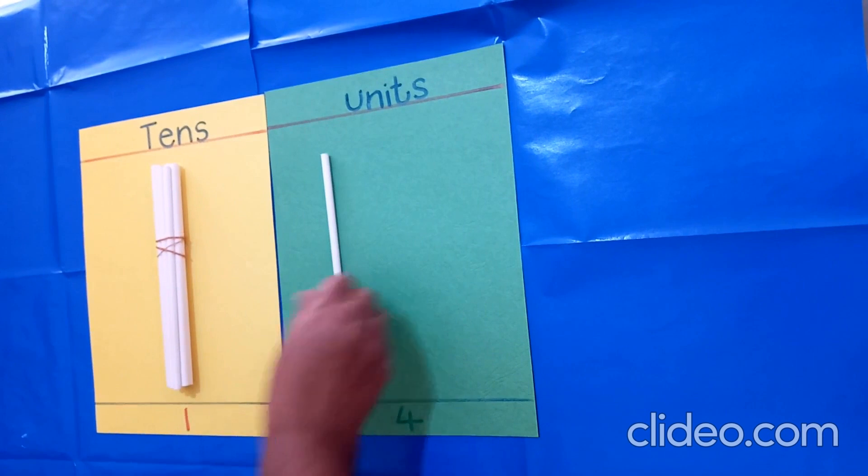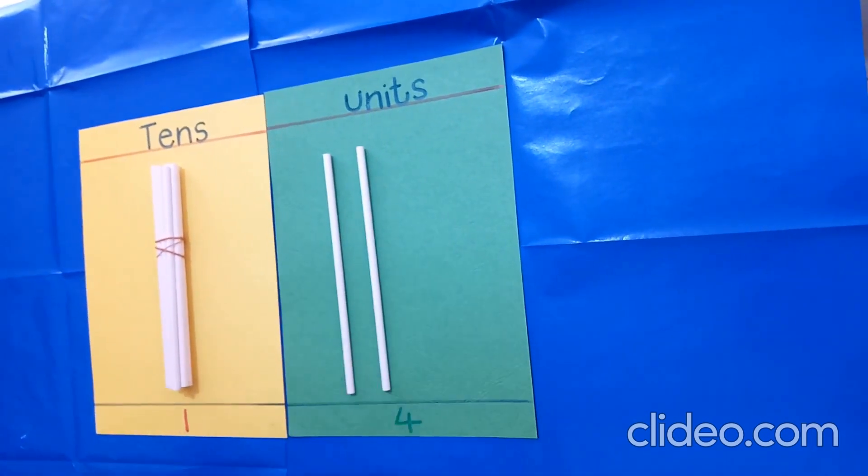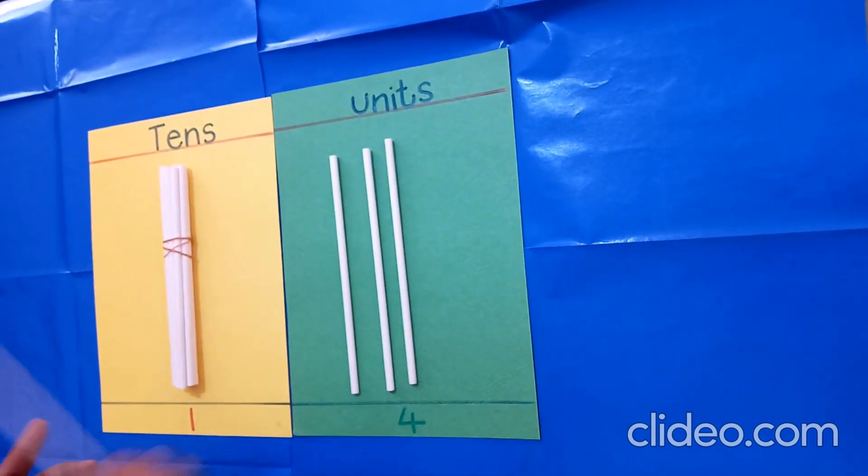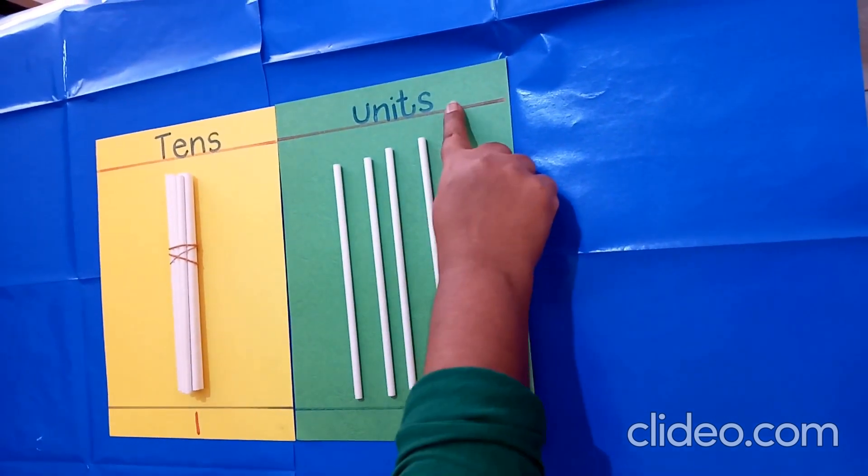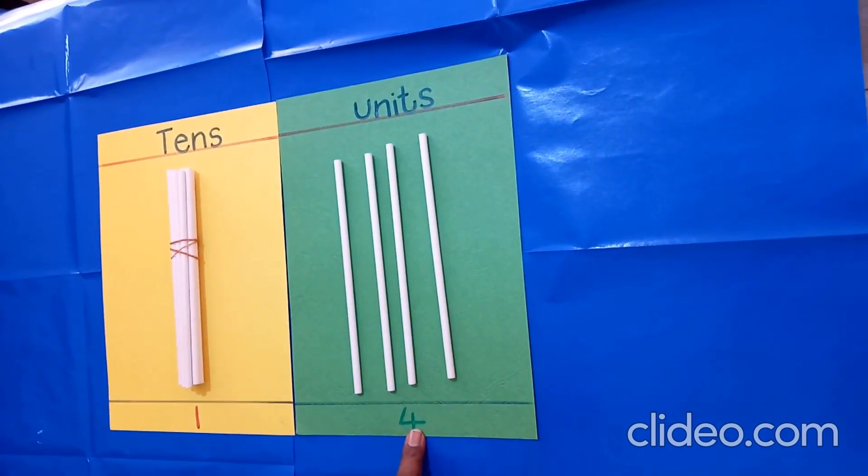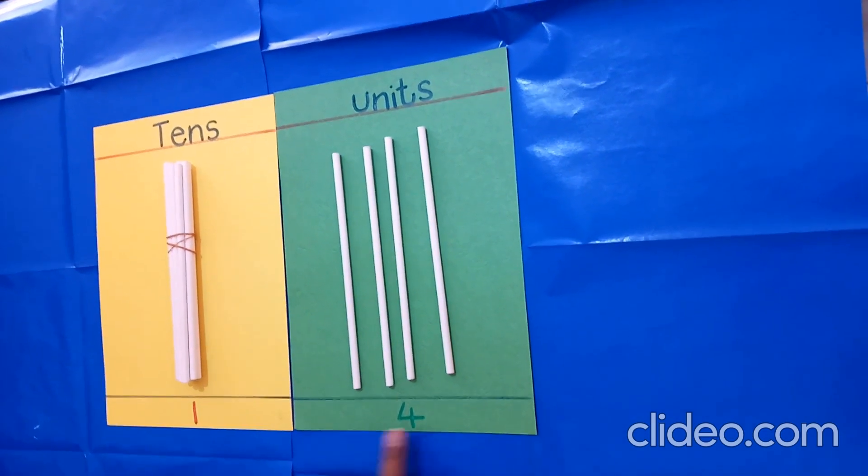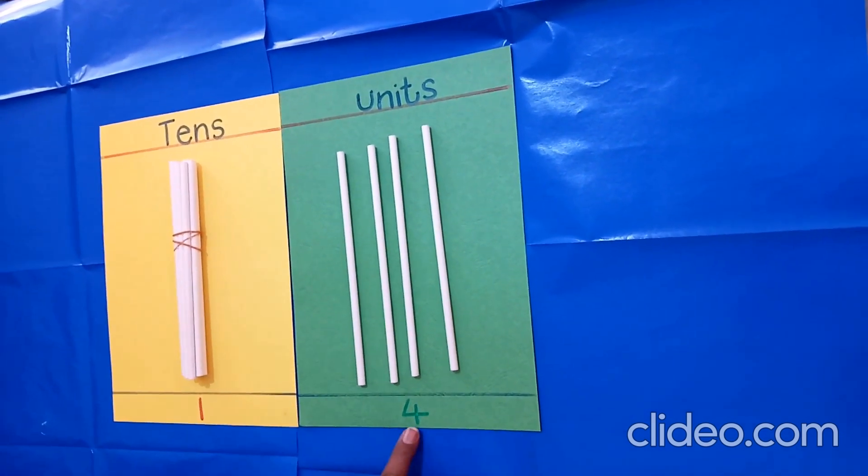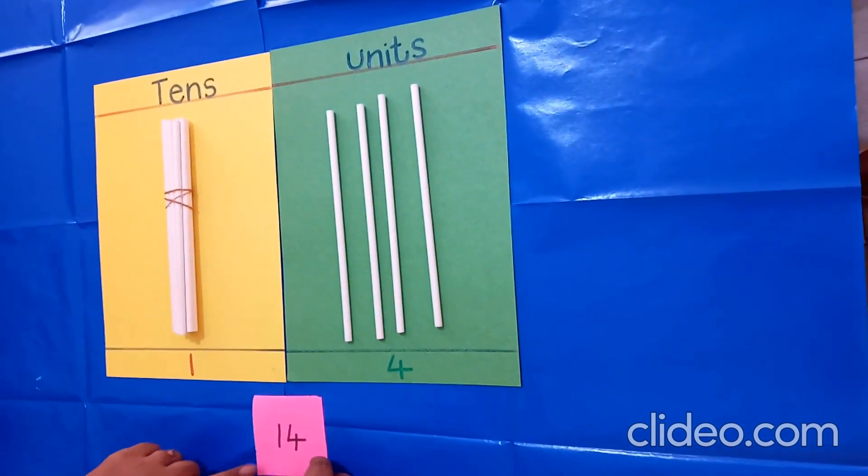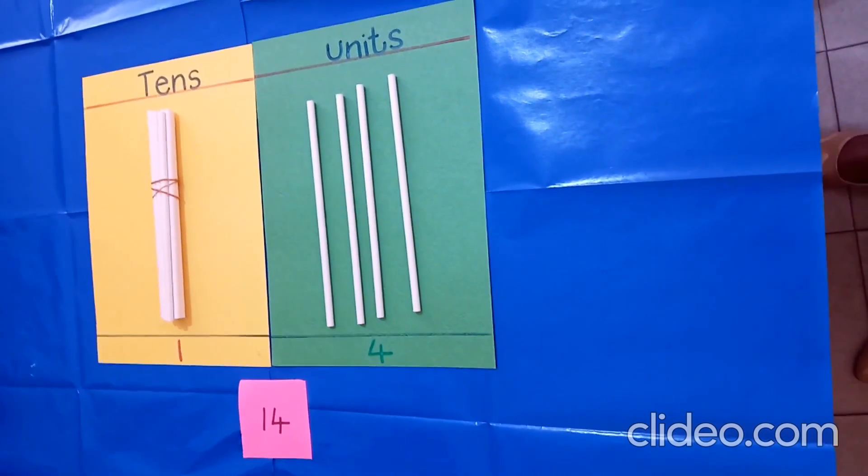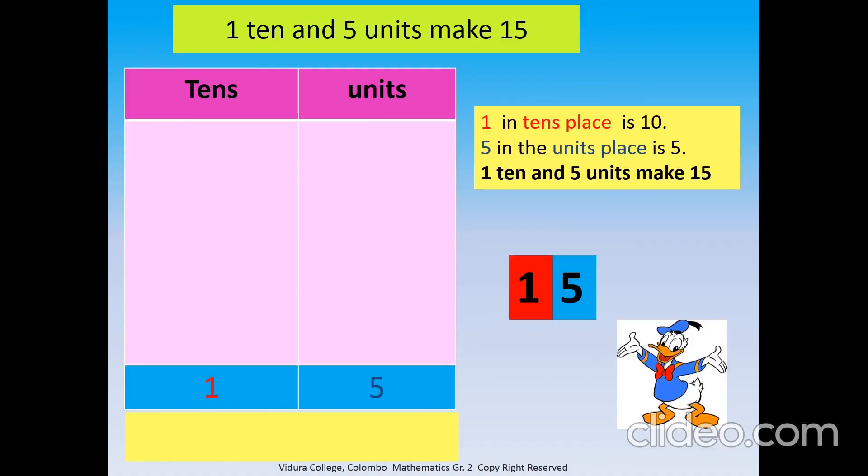Units: one, two, three, four. There are four units. Units go into this column. Four units. One ten and four units make fourteen.